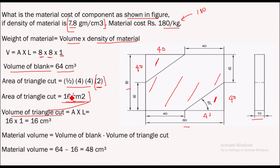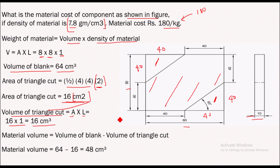The volume of the triangular cut is area into length. Area is 16 centimeter square, and the length — which is the depth or thickness of this triangular cut — is 10 mm, that is 1 centimeter. So 16 into 1 gives us 16 centimeter cube as the volume of these two triangles.